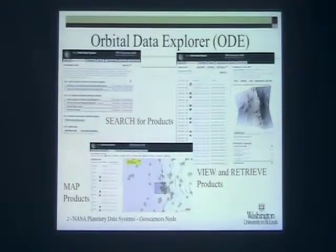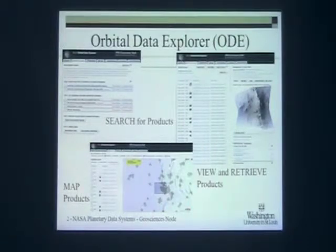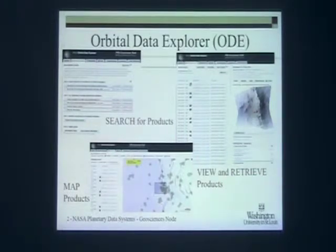The Orbital Data Explorer focuses on data taken from orbital spacecraft. Right now, for Moon, Mercury, and Mars — you'll see later when we actually talk about Venus a bit. We allow you to search the data, search across multiple nodes, select the data you want, look at the data, understand what you're looking at, and then eventually download it through a variety of different tools we offer.